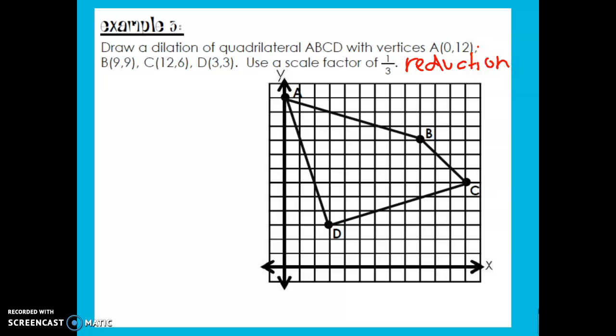So my scale factor is 1 third. So my motion rule or my algebraic representation is where did you start: (x, y). And then what are you multiplying by: (1/3 x, 1/3 y). And just a heads up, your motion rule or algebraic representation should always have the same value in front of x and y. You cannot change your scale factor halfway through.